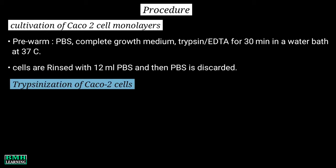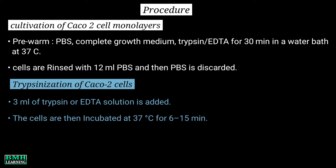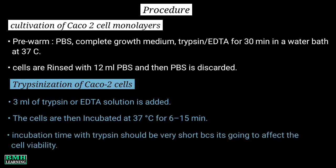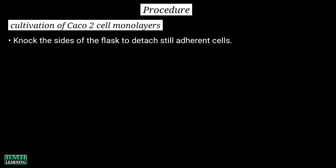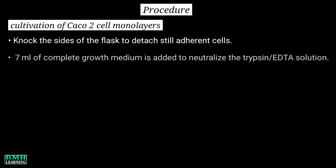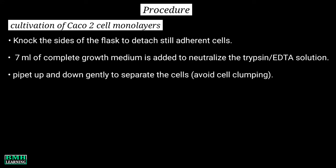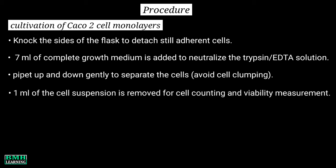Trypsinization of CACO2 cells: 3 ml of trypsin-EDTA solution is added and the cells are rinsed properly in trypsin solution. The cells are then incubated at 37°C for 6 to 15 minutes. The incubation time with trypsin should be very short as it affects cell viability. After this, knock the sides of the flask to detach still-adherent cells. Then 7 ml of complete growth medium is added to neutralize the trypsin-EDTA solution. Pipette up and down very gently to separate the cells, avoiding cell clumping. 1 ml of the cell suspension is removed for cell counting and viability measurement.